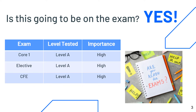The short answer is that you'll need to know leases pretty well throughout the whole PEP program. Since even at the core one module, you'll need to know this content at a level A, you'll be expected to retain that knowledge throughout your electives and the CFE as well.